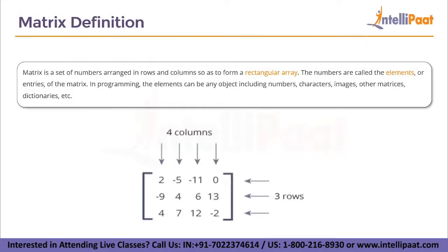Matrix definition: a matrix is a set of numbers arranged in rows and columns so as to form a rectangular array. The numbers are called elements or entries of the matrix. In programming, the elements can be any object including numbers, characters, strings, images, other matrices, or dictionaries — basically any object which exists in Python.